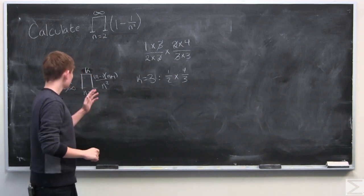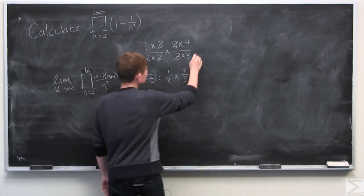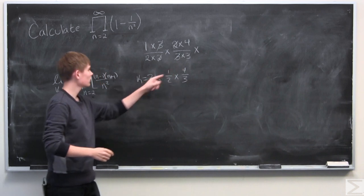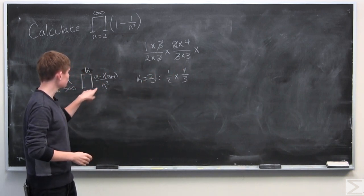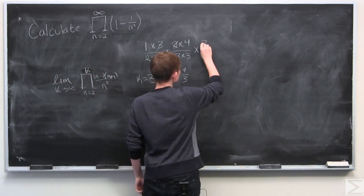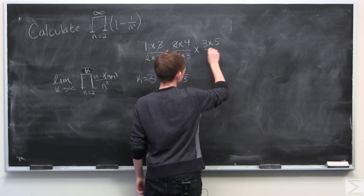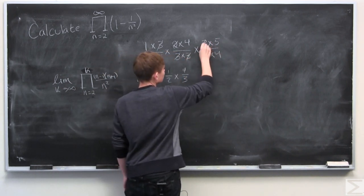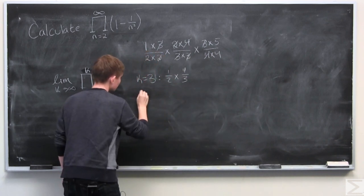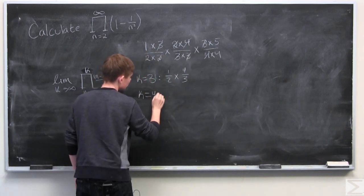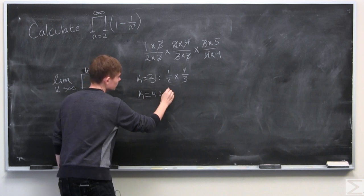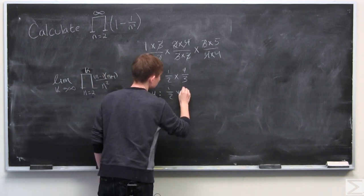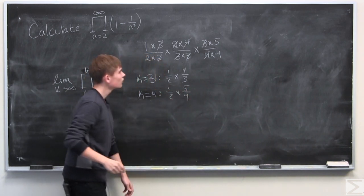And so now let's find when k is equal to 4. It'll be the same product multiplied by when n is equal to 4 which is 3 times 5 over 4 times 4. You can see again that we can cancel this out. And when k equals 4 we get 1 half times 5 over 4.